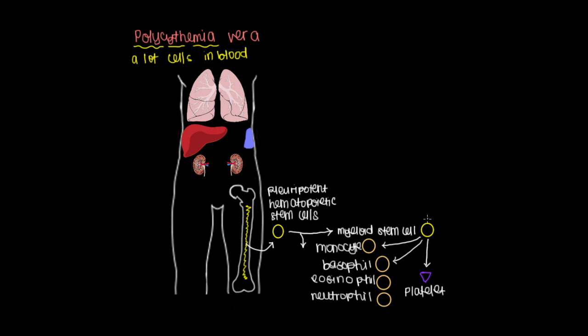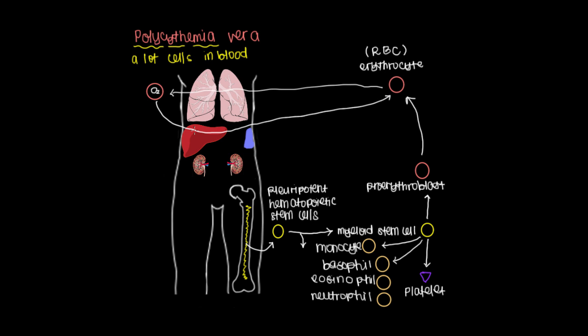The main pathway I want to talk about for this video is the one that will start off by producing this proerythroblast. After several other forms this will eventually become what we know and love, an erythrocyte or as we also call it a red blood corpuscle or a red blood cell. The red blood cell goes to the lungs to get oxygenated. It'll take the oxygen then and deliver it to a bunch of places around the body, including the liver, and then become deoxygenated again.